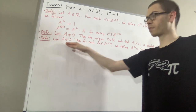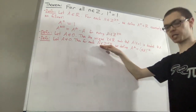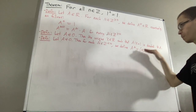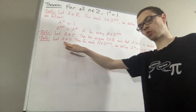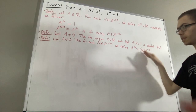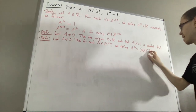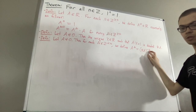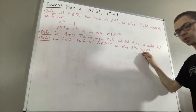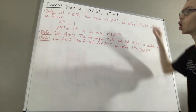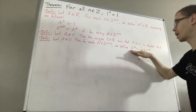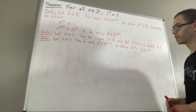Let a be a non-zero real number. Then, for each negative integer n, we define a to the power of n to be equal to the reciprocal of a to the power of negative n. Since a is a non-zero real number, the reciprocal of a is a real number. Since n is a negative integer, it follows that negative n is a positive integer. This makes sense, because we're able to take any real number and raise it to the power of a positive integer according to our definition for non-negative integer exponents. So, a to the power of n is defined to be a real number here.